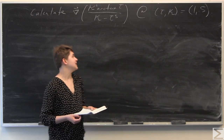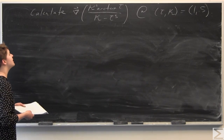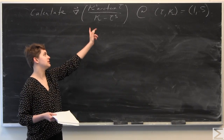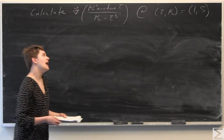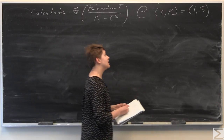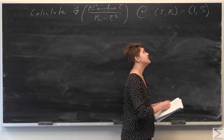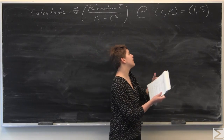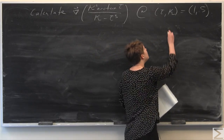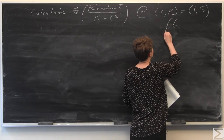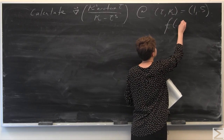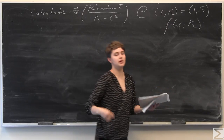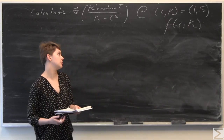This week's Advanced Problem of the Week asks you to calculate the gradient of this function here, which is a function of tau and kappa, at tau equals 1 and kappa equals 5. The function is f of tau and kappa.